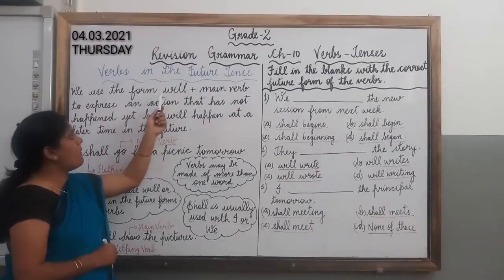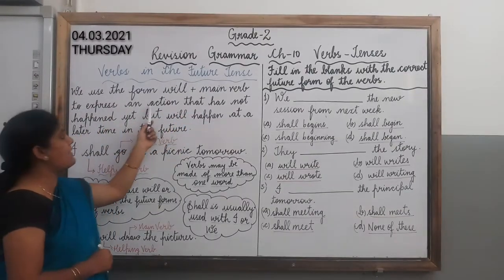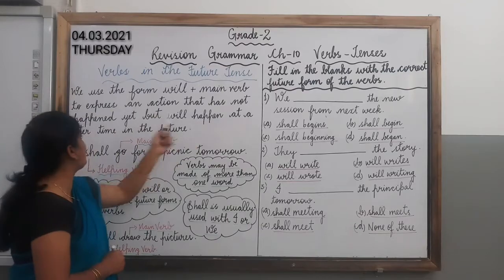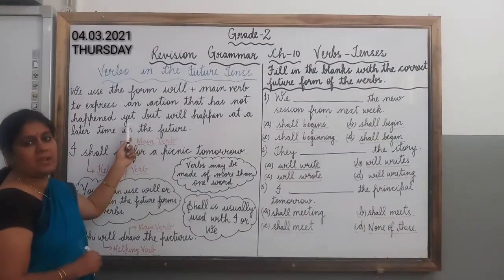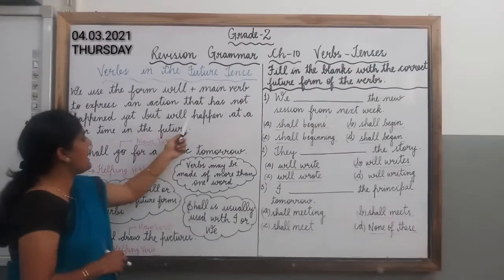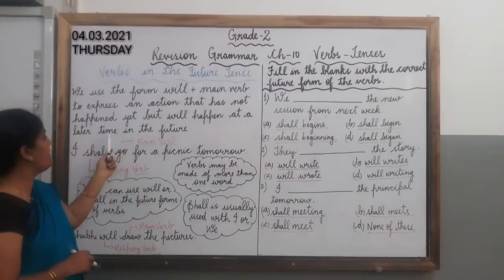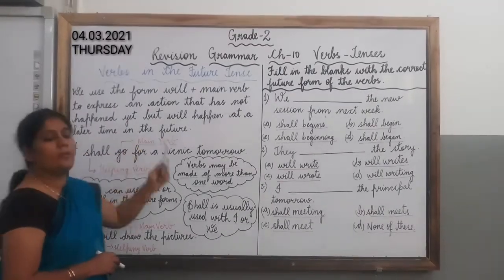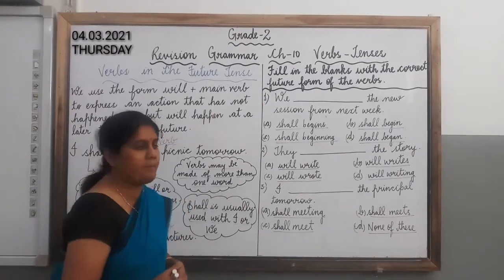We use the form 'will' plus main verb to express an action that has not happened yet. It means the action has not happened yet — it is to be done in the future, but will happen at a later time. The action which will be done in the future time.